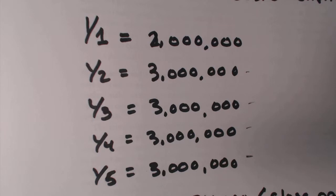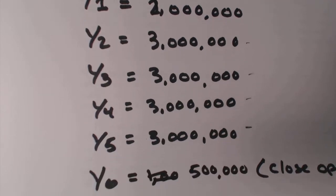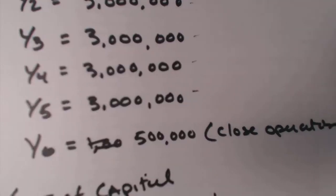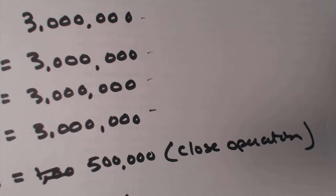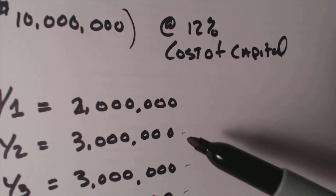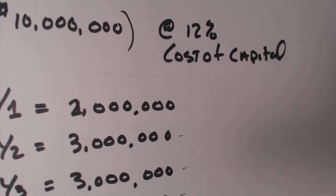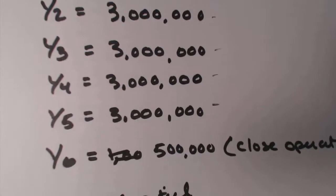In year six they are going to close their operation down because the business is going to go out of business. This could be any type of scenario — for instance, a mine where you run out of materials, a project that comes to an end like manufacturing airplanes under a Boeing or UTC government contract, or moving your business from one city to another. So to repeat: year one you make two million; years two through five you make three million each; and in year six you close the business down for half a million dollars.